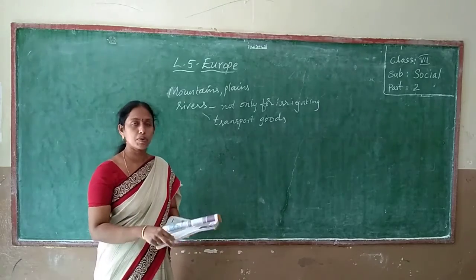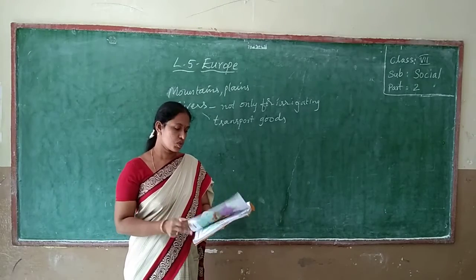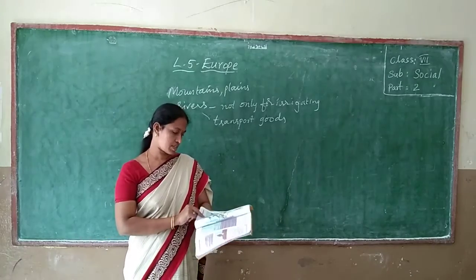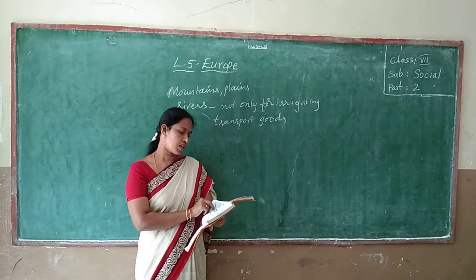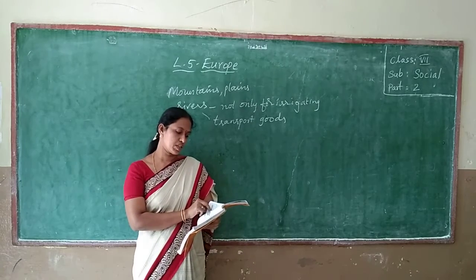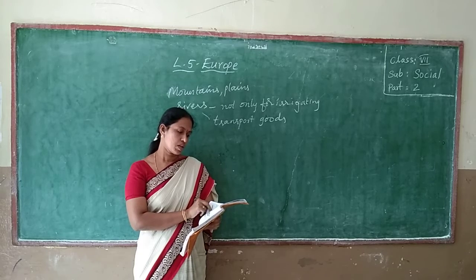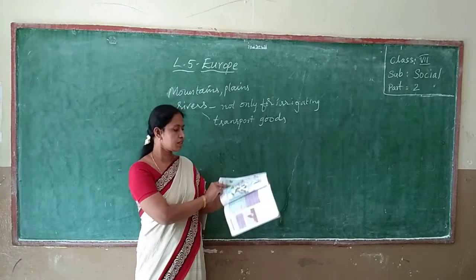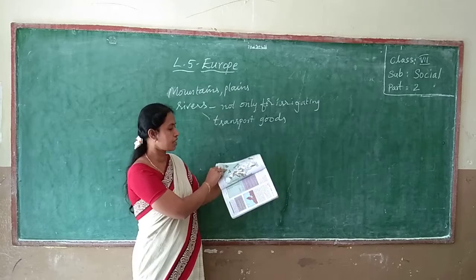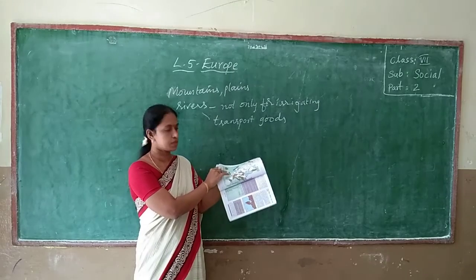If we observe in map 4, which was given in this textbook page number 46, you see Rhine river, Seine river, Odon, Volga river — so many rivers are there. And it is the Danube river in this map.